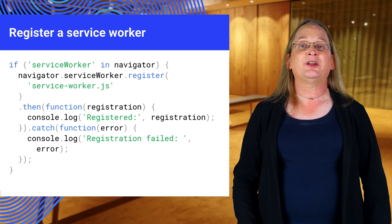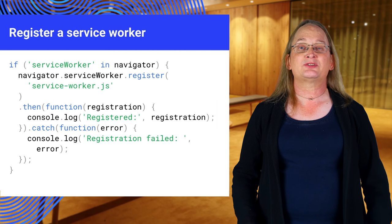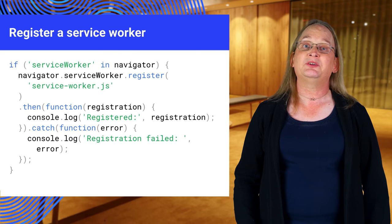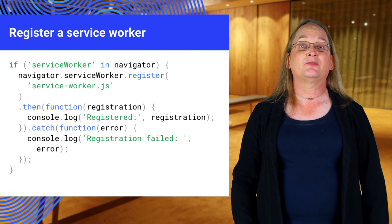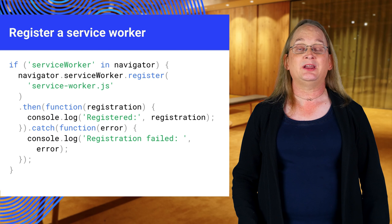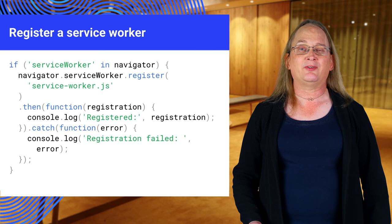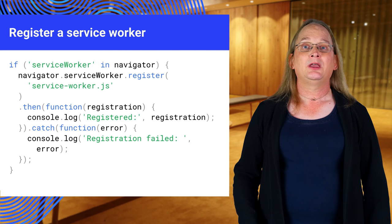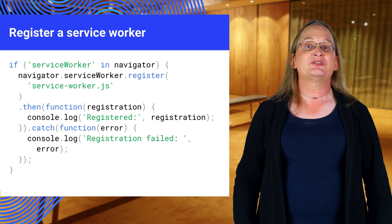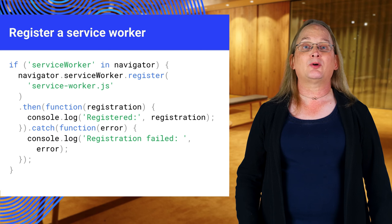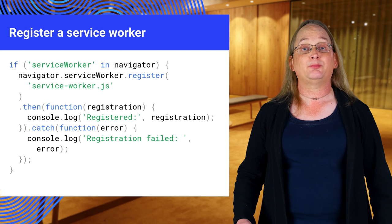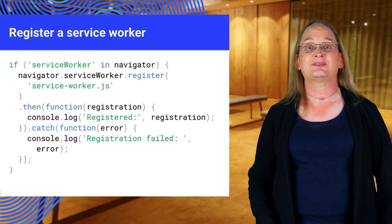Call serviceworker.register and pass in the name of the service worker's script. This returns a promise that resolves when the service worker is ready, or rejects if it fails. We won't use the contents of the registration here, but you normally want to save it to support features like push notifications.